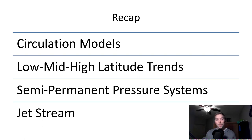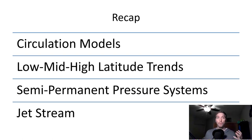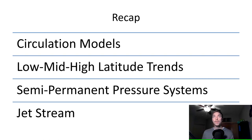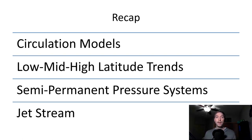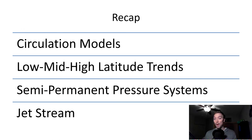As a quick recap: we talked about different circulation models, low, mid, and high latitude trends, and the semi-permanent pressure systems that set up over our world. Finally we talked about the polar and subtropical jet streams and how they set up. In the next video we'll be focusing on ocean circulations and ocean trends, things like El Niño, La Niña cycles, the Pacific Decadal Oscillation, and broader climatological trends related to ocean circulation. Then we'll dive into moisture after that. See you in the next one — have a great day.